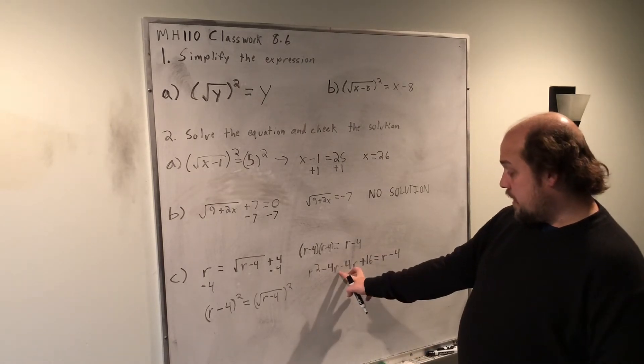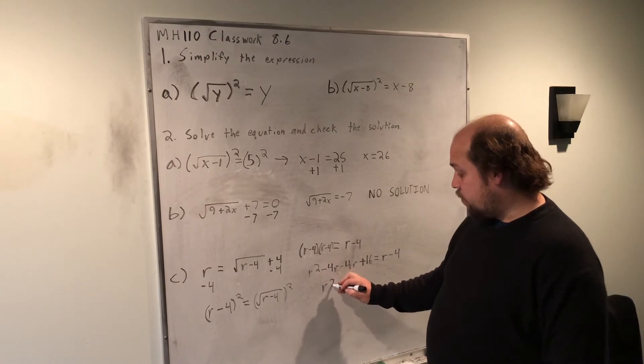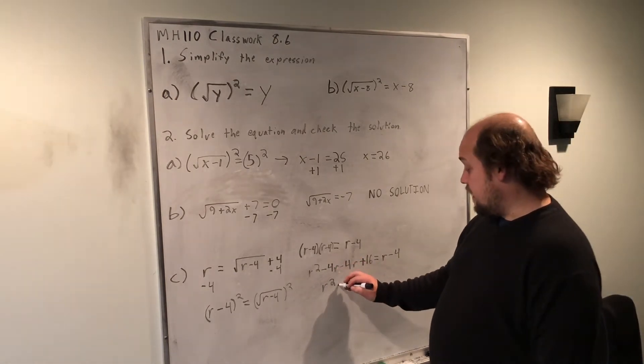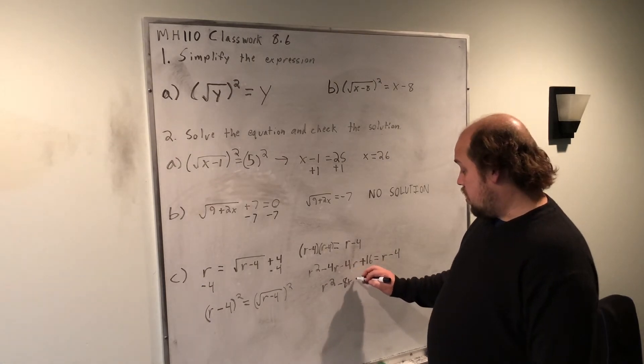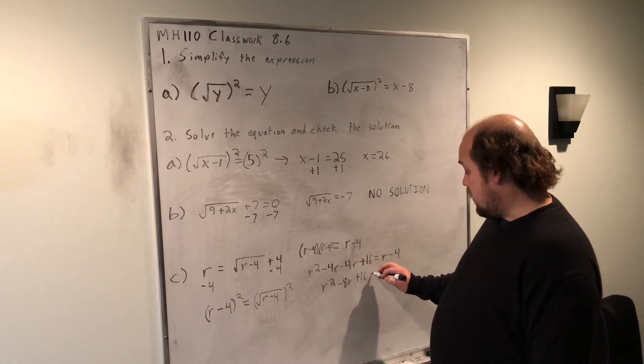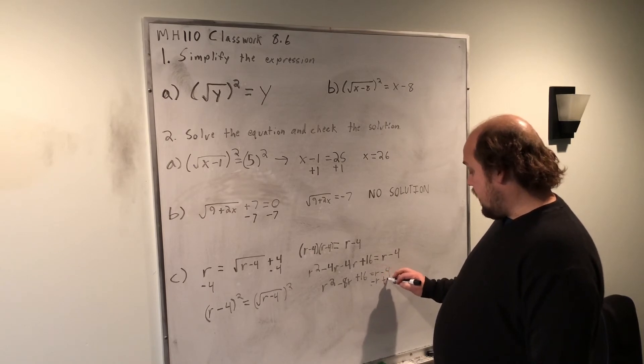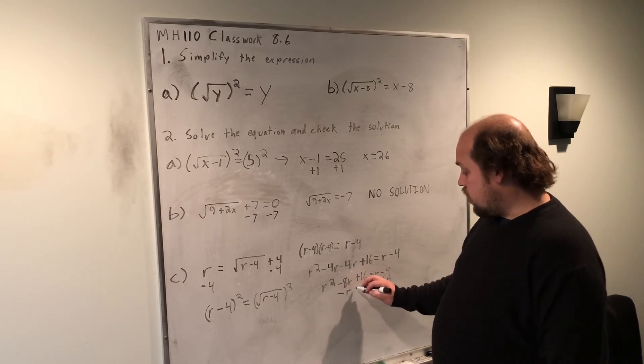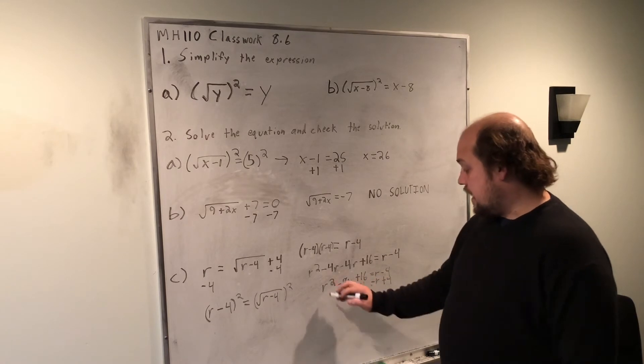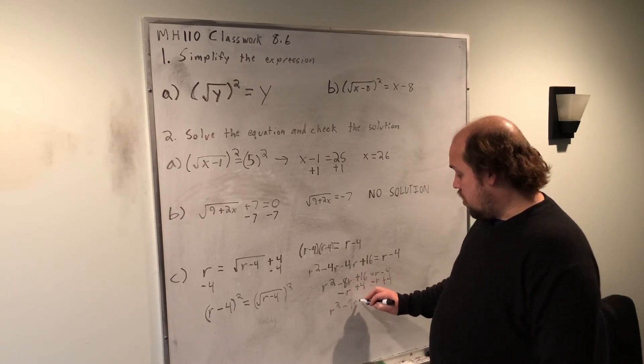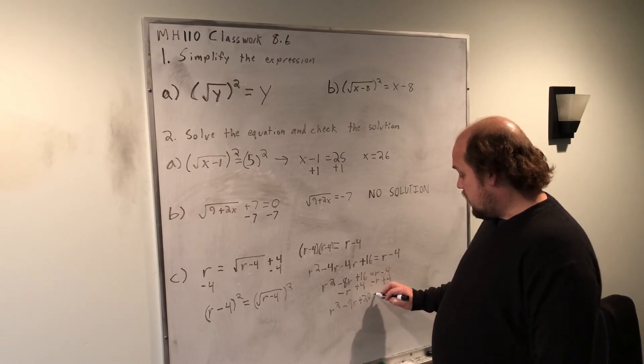When I combine like terms, I'm left with r squared. The two negative 4r's combined to give me negative 8r plus 16 equals r minus 4. I can now subtract r and add 4. Subtract r and add 4. Now I'm left with r squared minus 9r plus 20 equals 0.